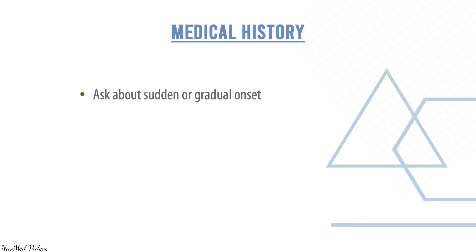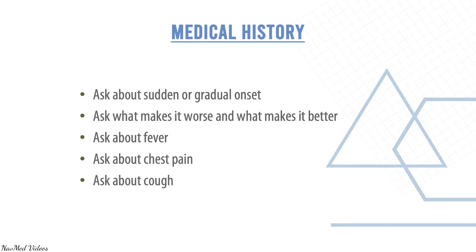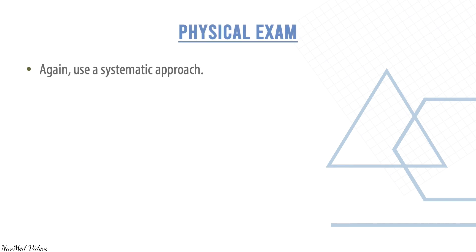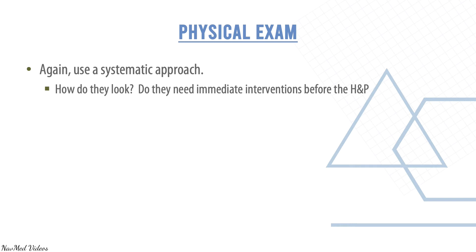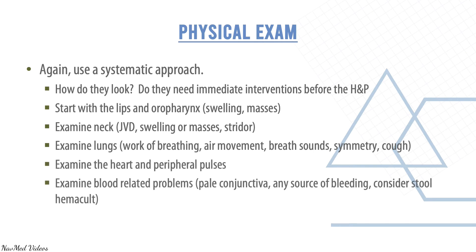In the medical history, ask about sudden or gradual onset, what makes it worse, and what makes it better. Ask about fever, chest pain, and cough. On physical exam, use a systematic approach: assess how they look, determine if they need immediate intervention, then examine the lips and oropharynx, neck, lungs, heart, peripheral pulses, and blood-related findings.